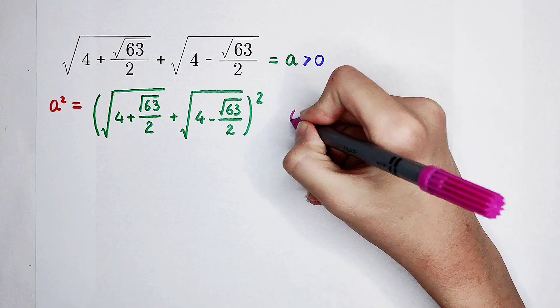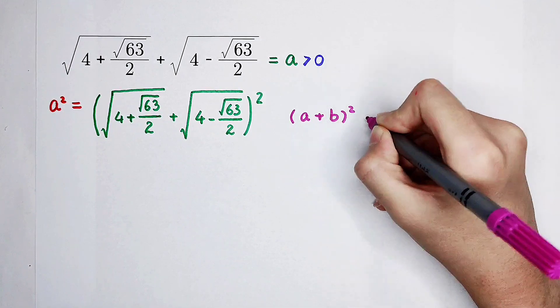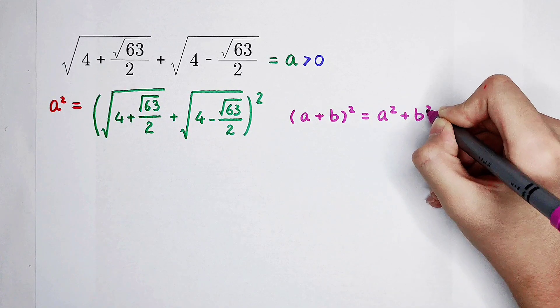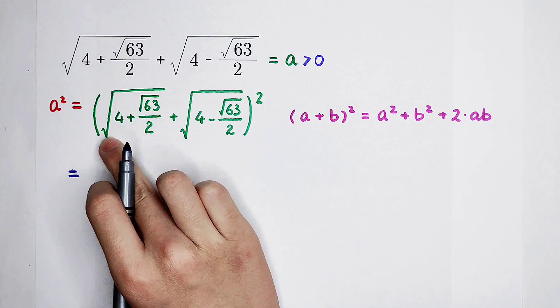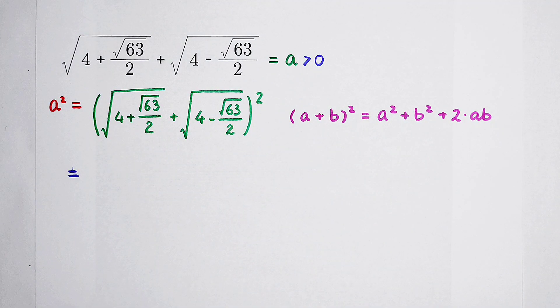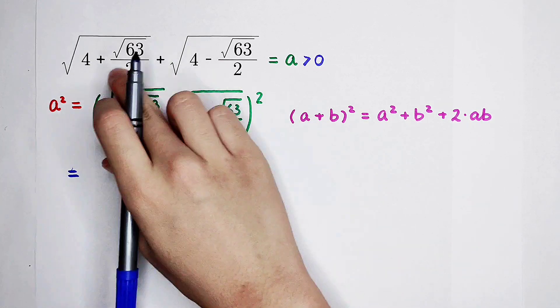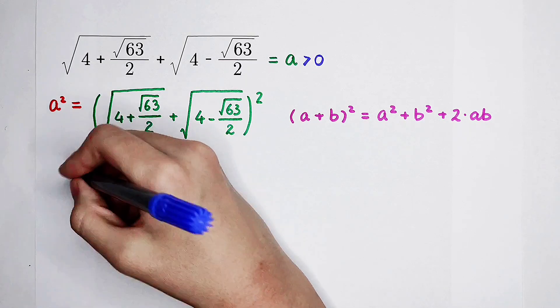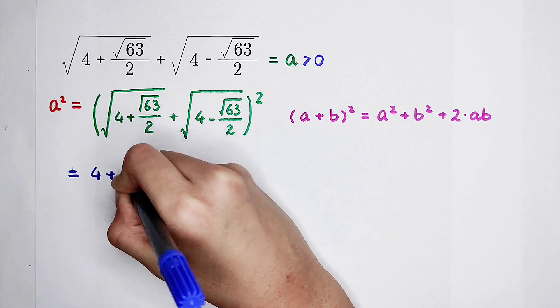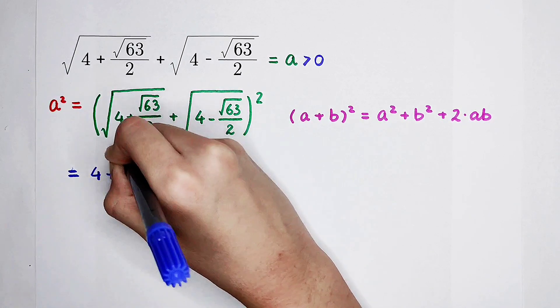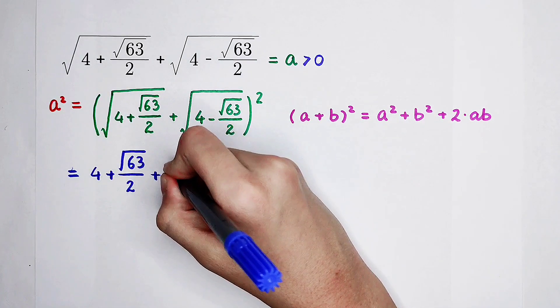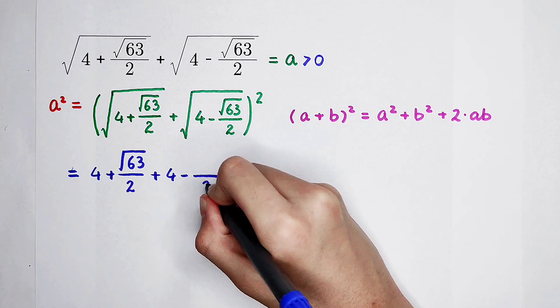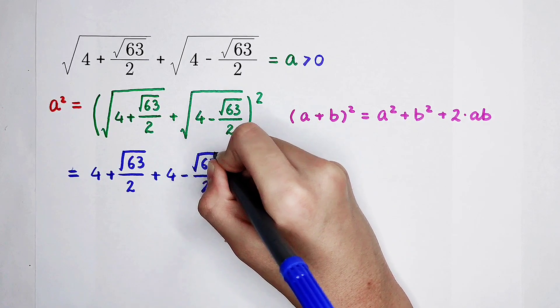Now, I have to use a formula. A plus b all squared is a squared plus b squared, and then plus 2 times ab. So now, a is this square root of 4 plus square root of 63 divided by 2, and b is square root of 4 minus square root of 63 divided by 2. So, as our second step, a squared is this squared. Just remove the square root: 4 plus square root of 63 divided by 2, and then plus b squared, which is 4 minus square root of 63 divided by 2.